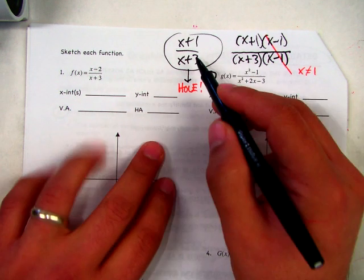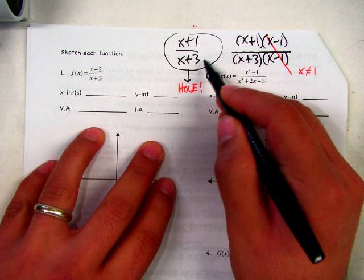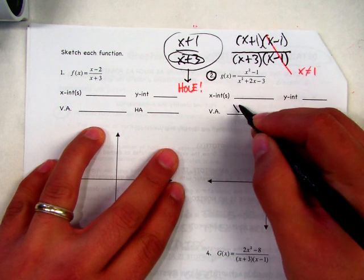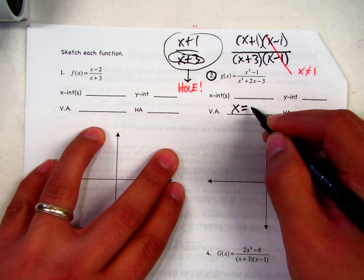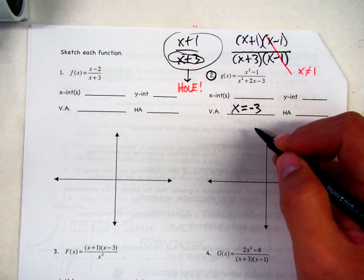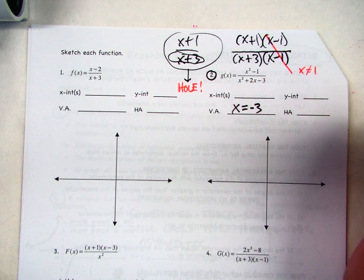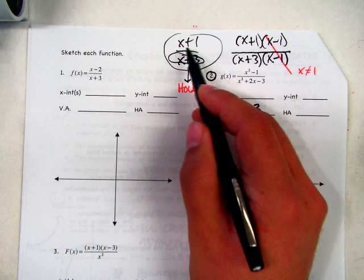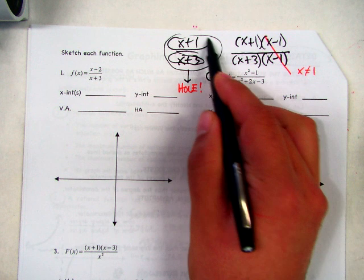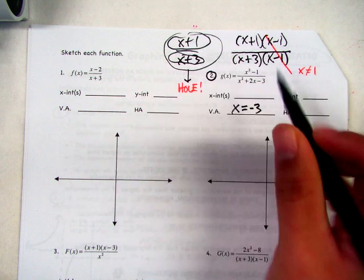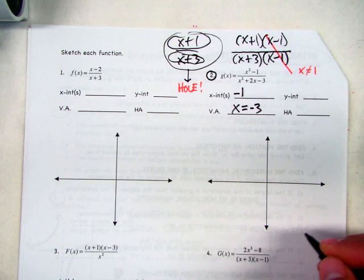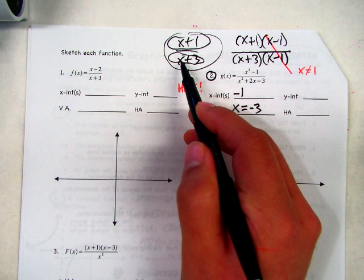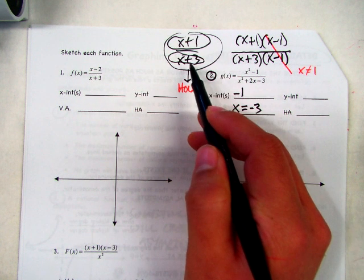X cannot equal negative 3 is where we get the vertical asymptote. Looking at what's left, the denominator tells us the vertical asymptote is x equals negative 3 — always write the equation of the line, not just the number. For x-intercepts, set the numerator equal to zero, so x equals negative 1. For the y-intercept, plug in zero for x: zero plus 1 over zero plus 3 equals one third.